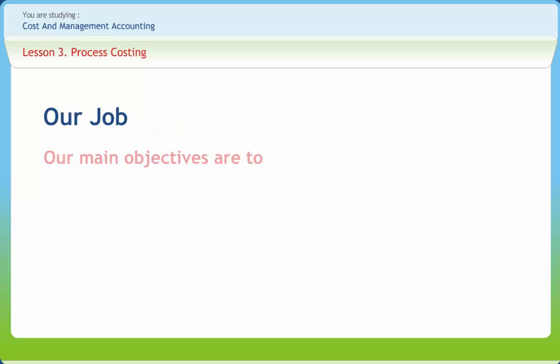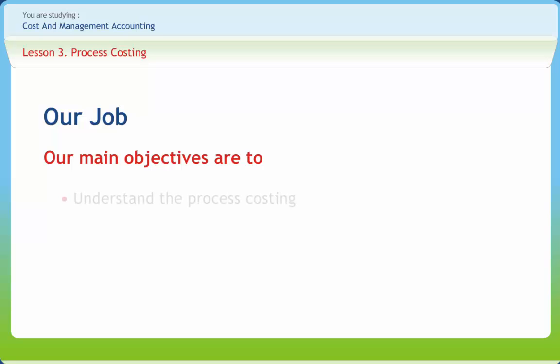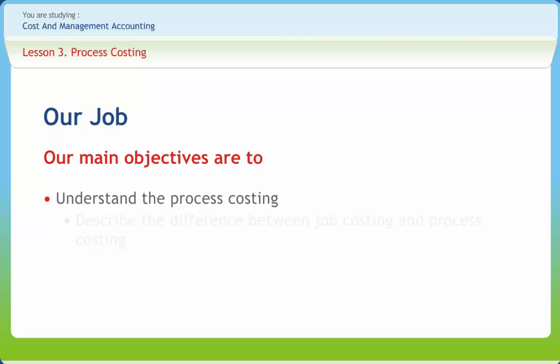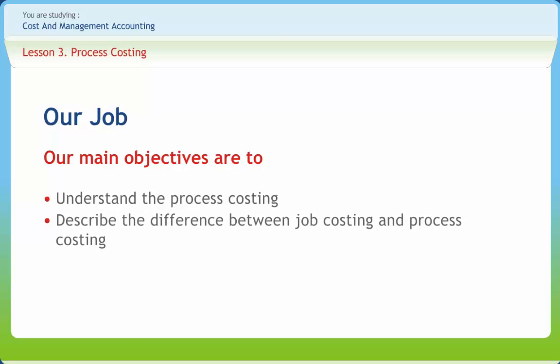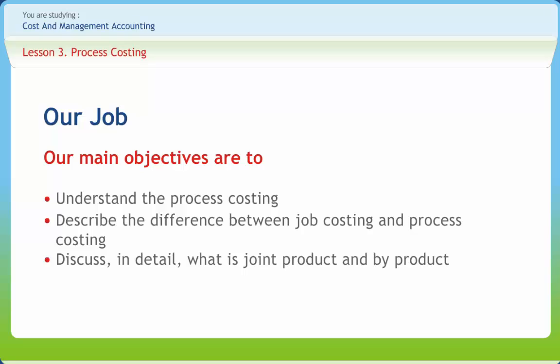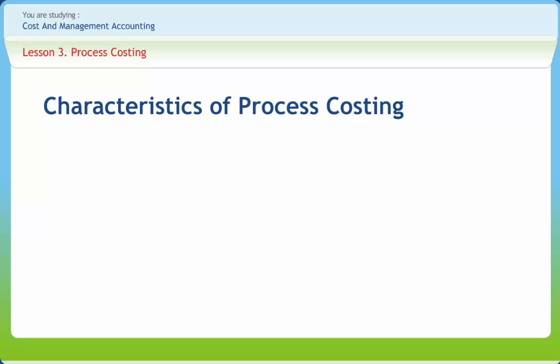After studying this lesson, you should be able to understand process costing, describe the difference between job costing and process costing, and discuss in detail what is joint product and by-product. Process costing method is applicable where the output results from a continuous process and products are identical and cannot be segregated.